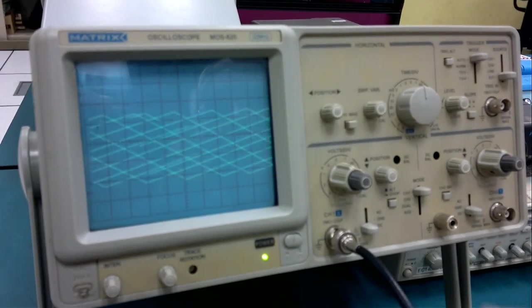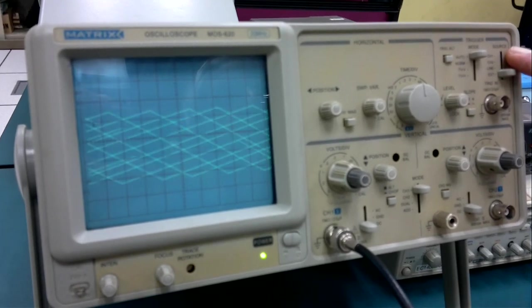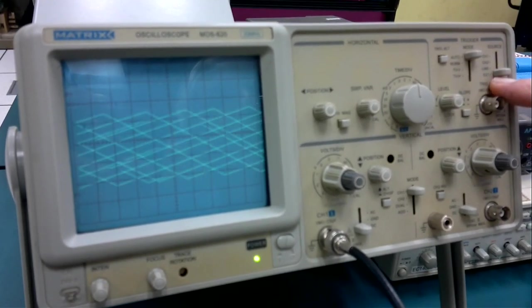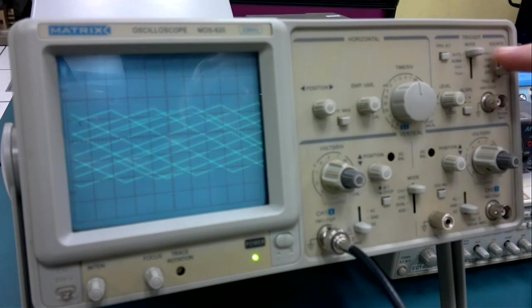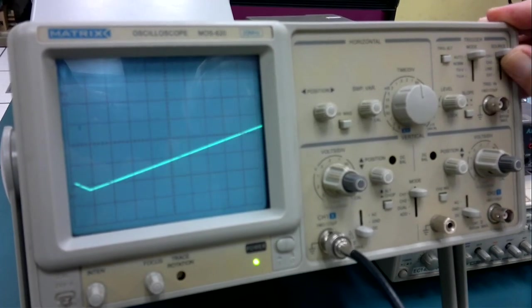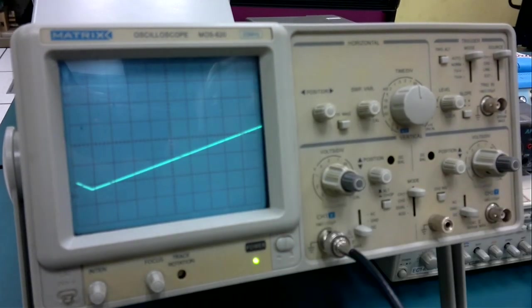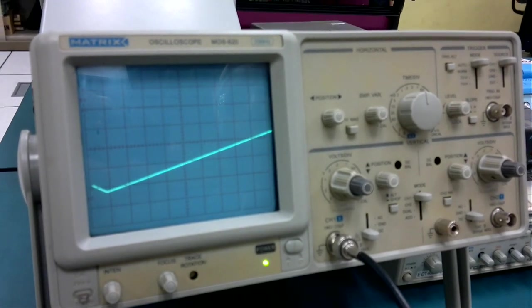Very good. Still haven't solved it. Well, where's the trigger coming from? Where's the source? External, line, channel two, channel one. Let's make it channel one. Yes. Oh, now we've got a steady trace. Very good. We are catching the ball.